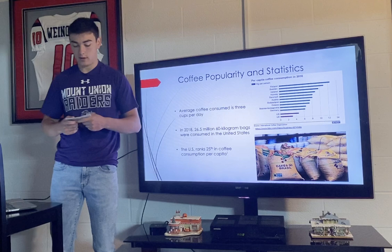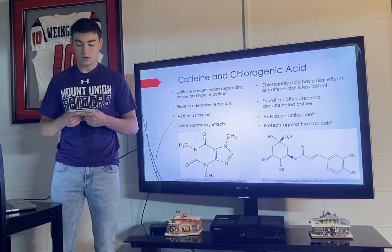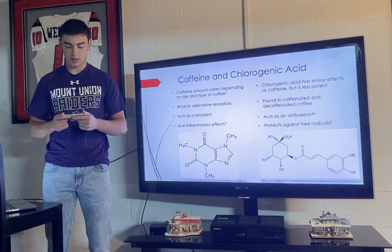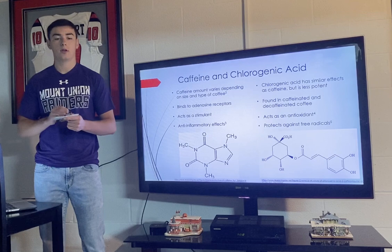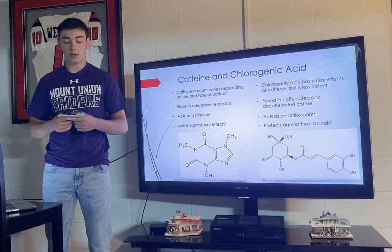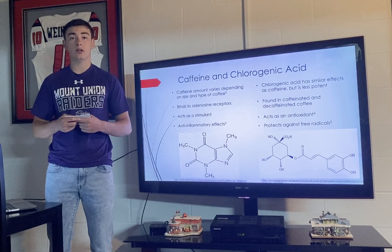Coffee contains hundreds of compounds — some are well known, but others may not be. Two of the compounds thought to impact human health include caffeine and chlorogenic acid. The Center for Science and the Public Interest stated caffeine amounts widely vary depending on the size and type of coffee. For example, a 12-ounce Dunkin' Donuts iced coffee contains 327 milligrams of caffeine, but a 14-ounce Dunkin' Donuts hot coffee only contains 210 milligrams of caffeine.